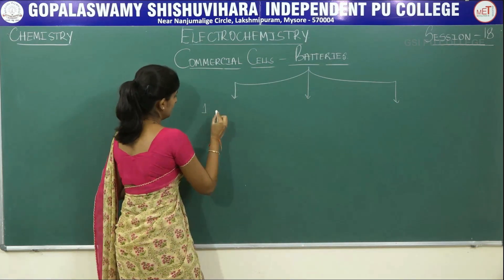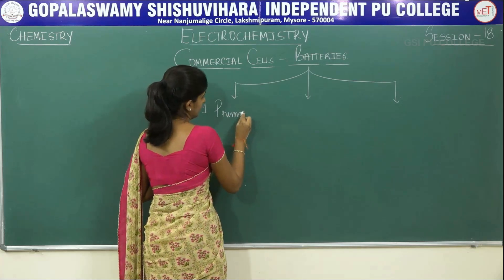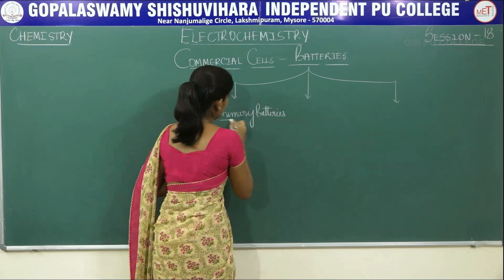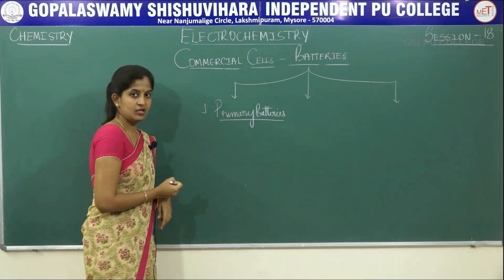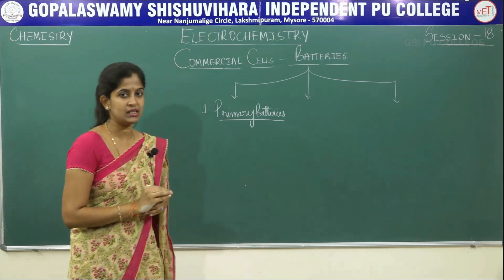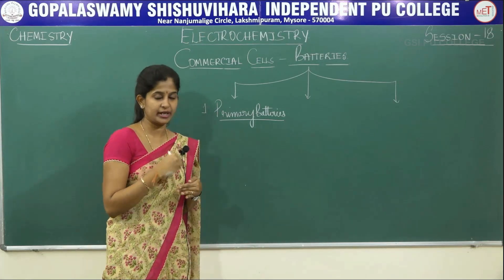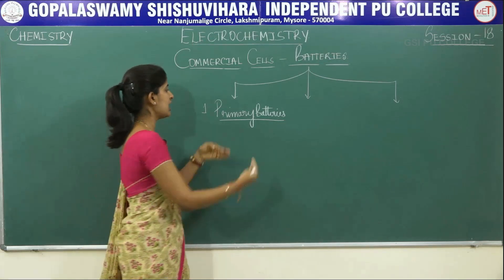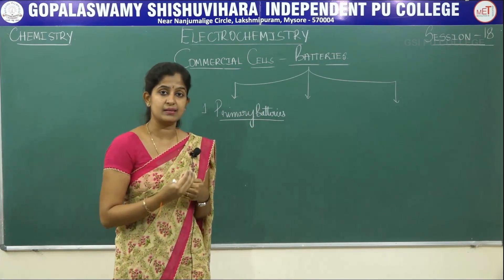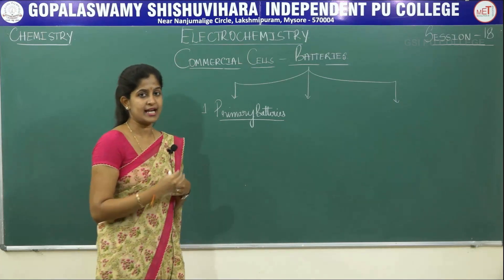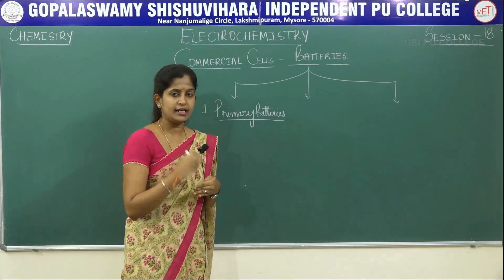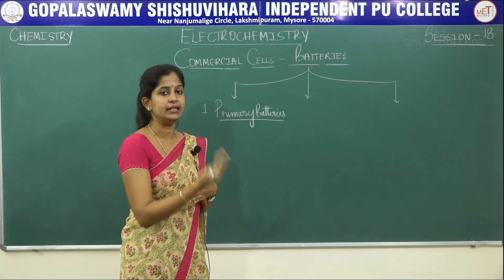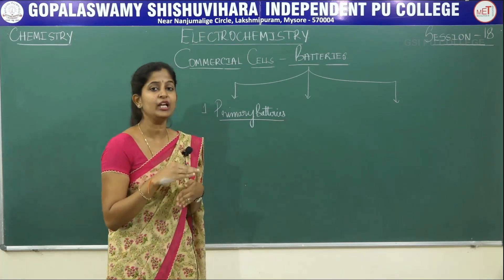Primary batteries are electrochemical cells that produce chemical energy and convert it into electrical energy. However, the chemical reaction happening inside a primary battery is an irreversible reaction. Once the chemical reaction occurs and energy is converted into electrical energy, the battery is finished — you cannot reverse it. Hence, these are batteries which cannot be reused.